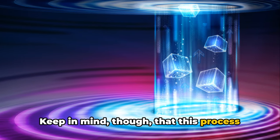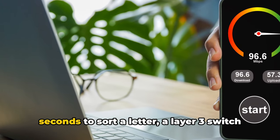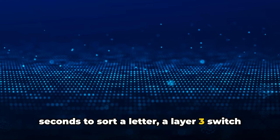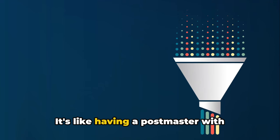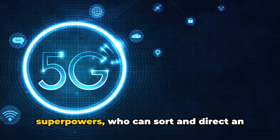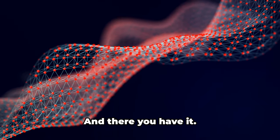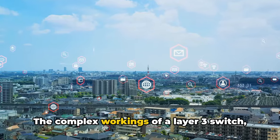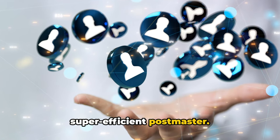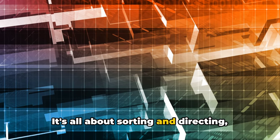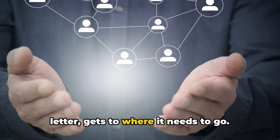Keep in mind though, that this process happens at lightning speed. While a postmaster might take a few seconds to sort a letter, a layer 3 switch can handle millions of data packets in a blink of an eye. It's like having a postmaster with superpowers, who can sort and direct an entire city's worth of mail in a split second. And there you have it. The complex workings of a layer 3 switch, simplified with the analogy of a super-efficient postmaster. It's all about sorting and directing, making sure each data packet, much like a letter, gets to where it needs to go.